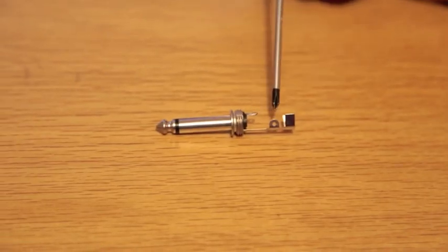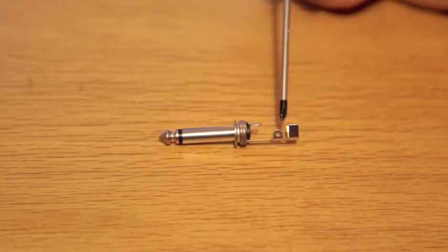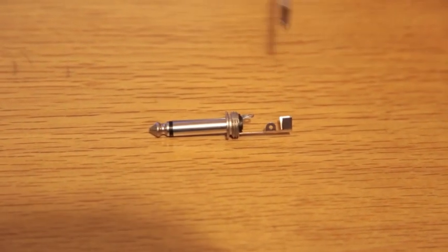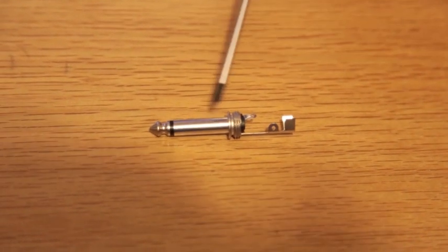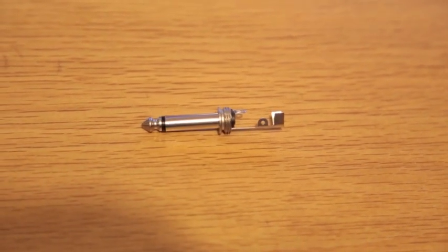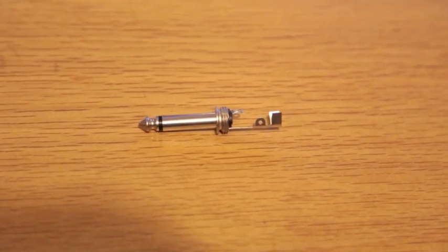You can see there's two terminals on the back end of the jack. There's this one here which goes through to the center which goes on to the tip, and then there's this bigger one which goes on to the shield or the earth. So we connect the red to the tip and the black to the earth or shield.